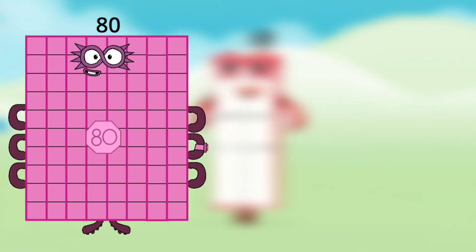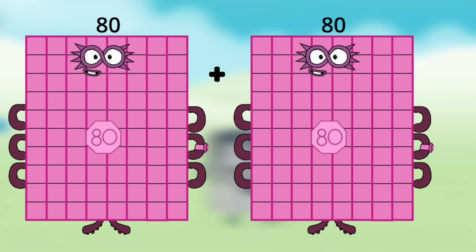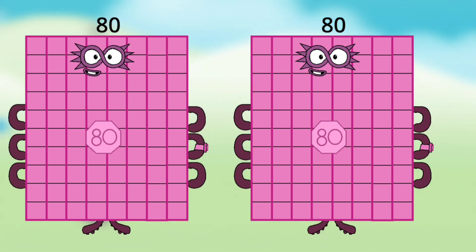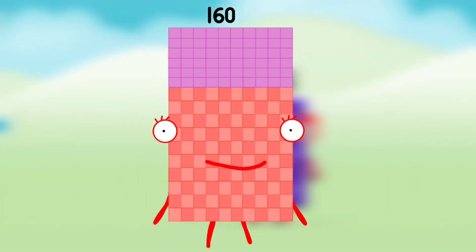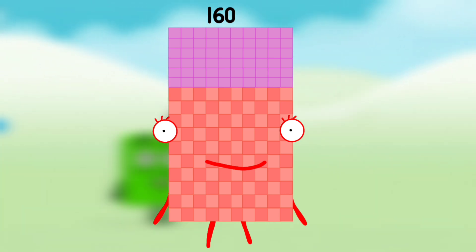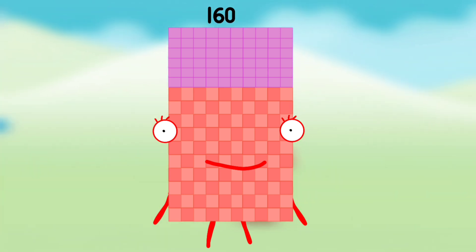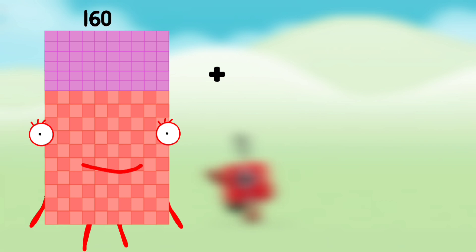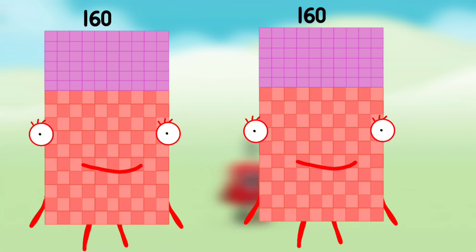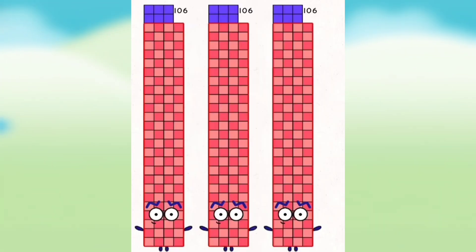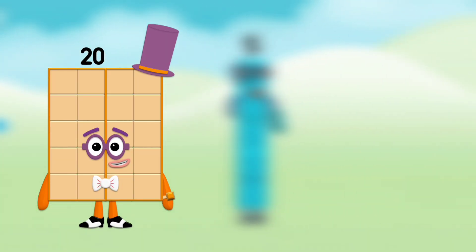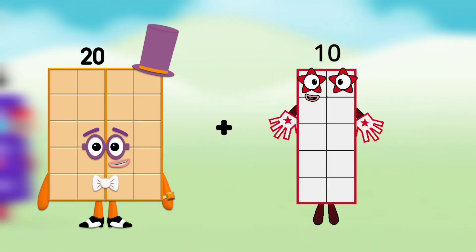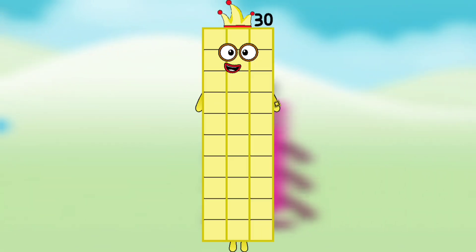Number Blocks 80 plus Number Blocks 80 equals 160, equals Number Blocks 160. Number Blocks 160 plus Number Blocks 160 equals Number Blocks 320. Number Blocks 20 plus Number Blocks 10 equals Number Blocks 30.